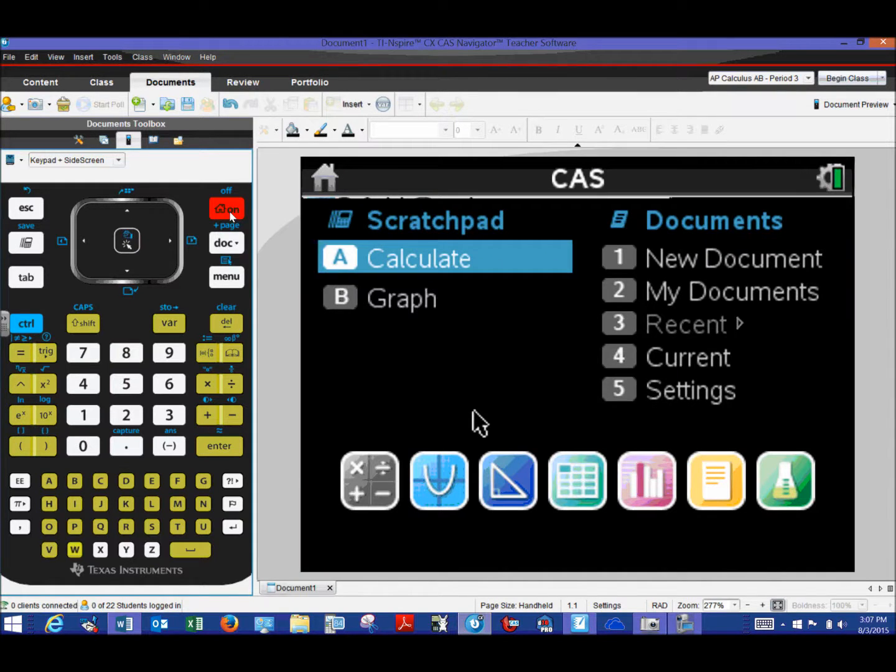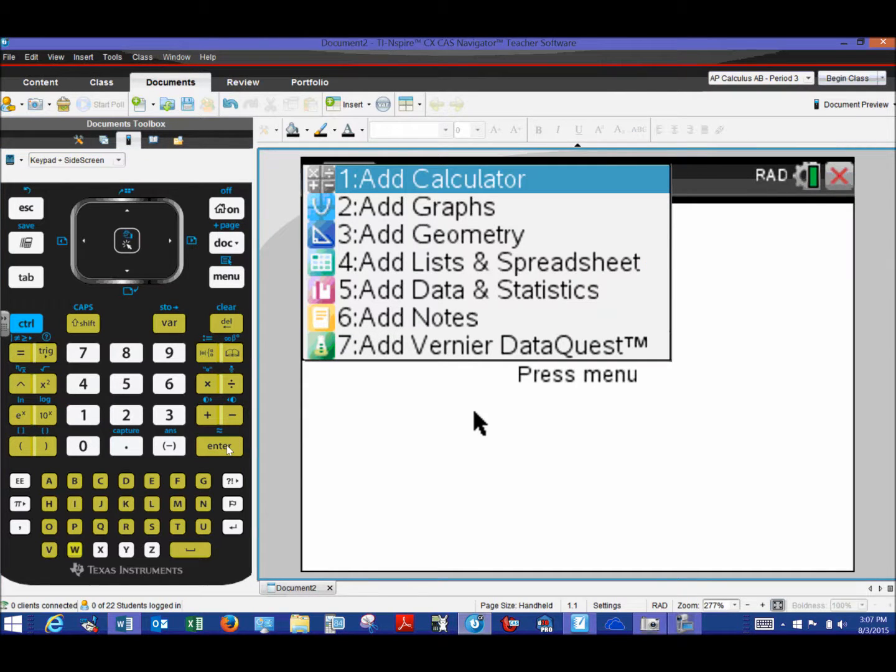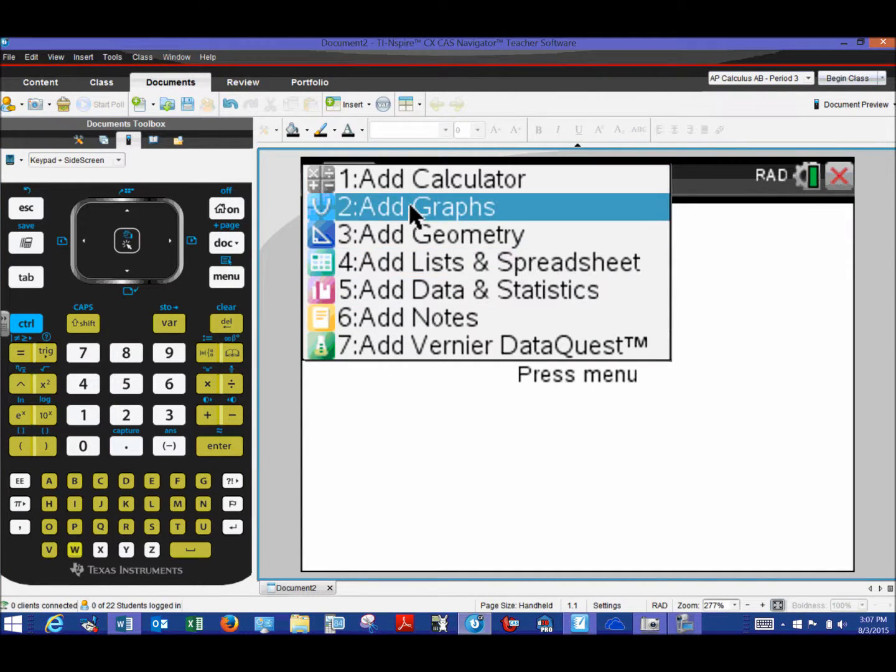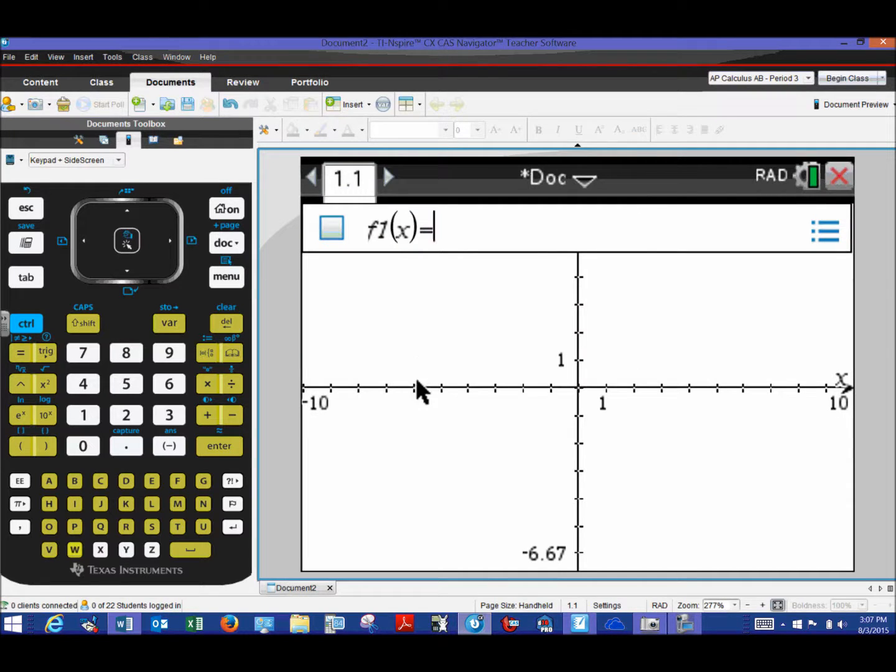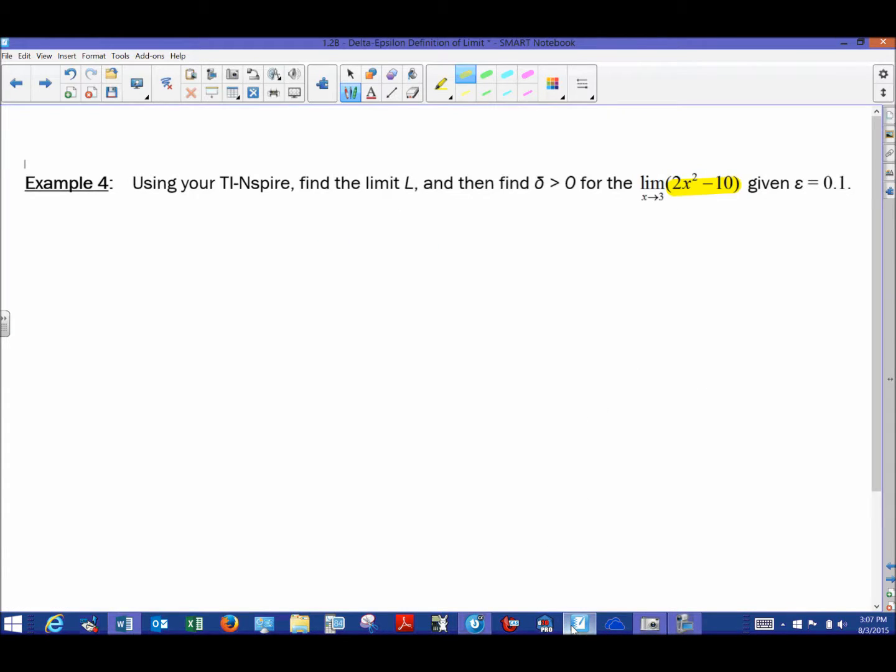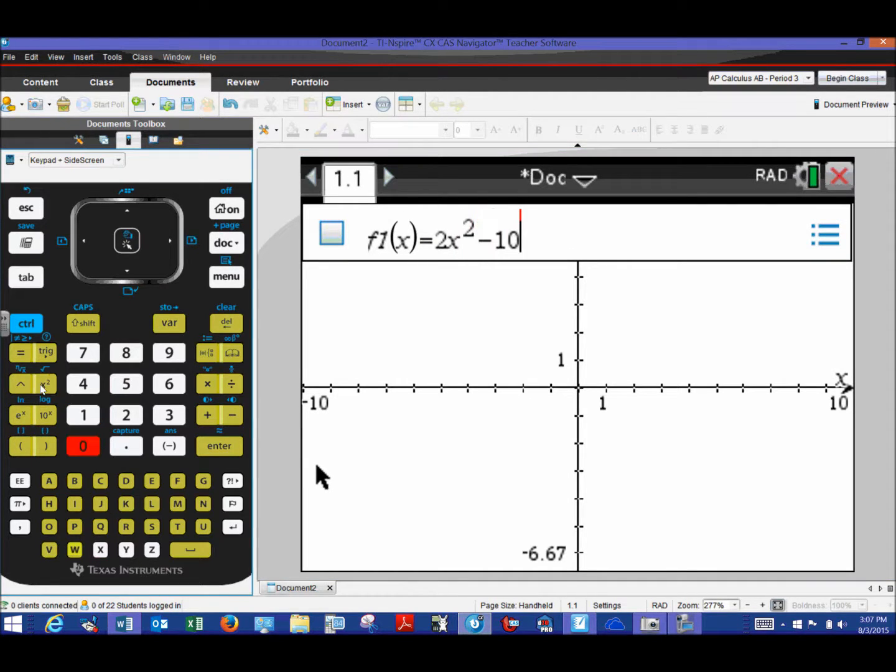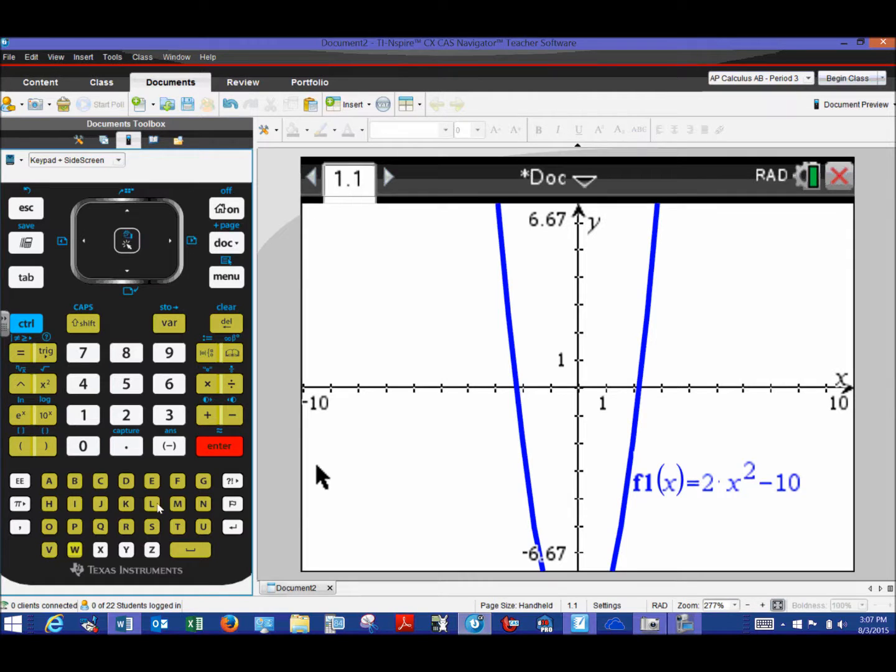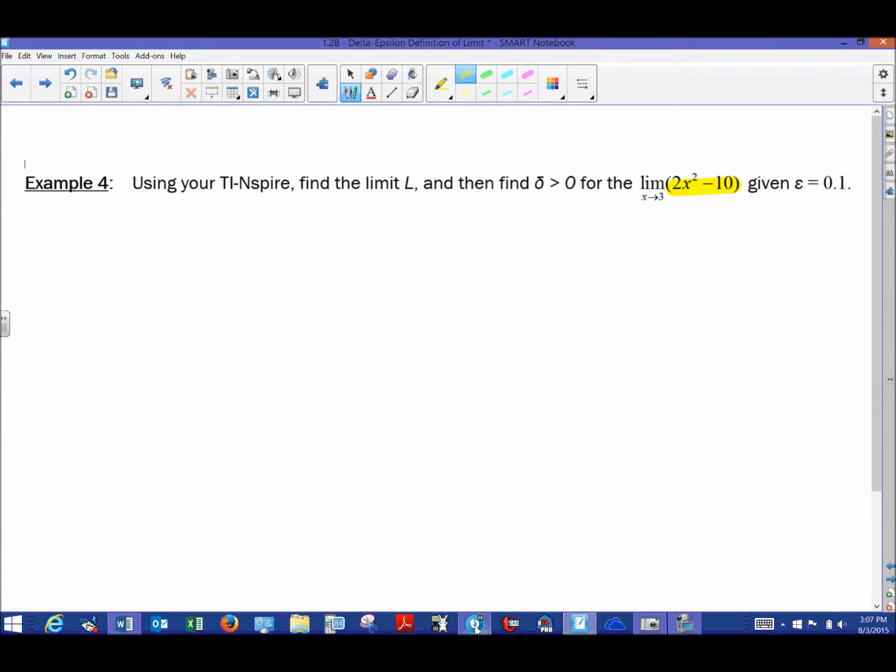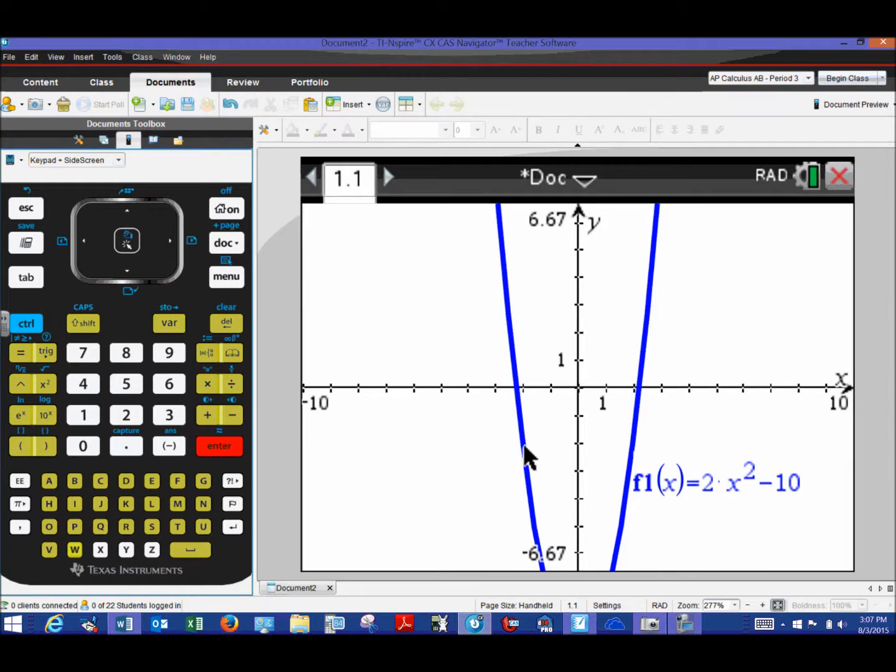So the first thing that I would like everyone to be able to do is to make a new document. From the home screen we would choose option one, new document, and as you can see from our particular example we're going to add a graph page. Our example deals with the function 2x squared minus 10. So that's going to be the particular function that we graph, 2x squared minus 10. I understand that part of the graph, this parabola, doesn't lie completely on our window. That's no big deal. We can adjust the window here in just a little bit.